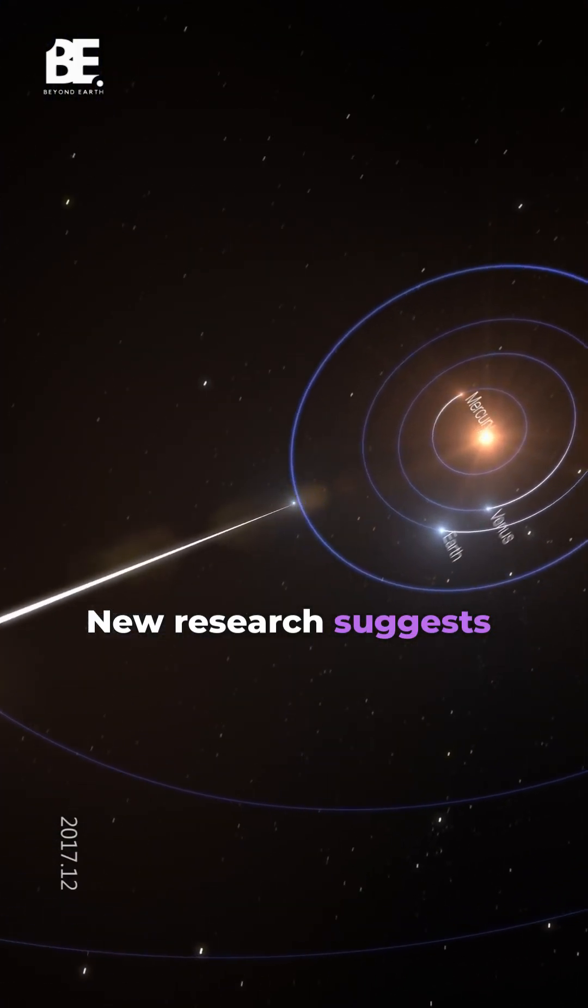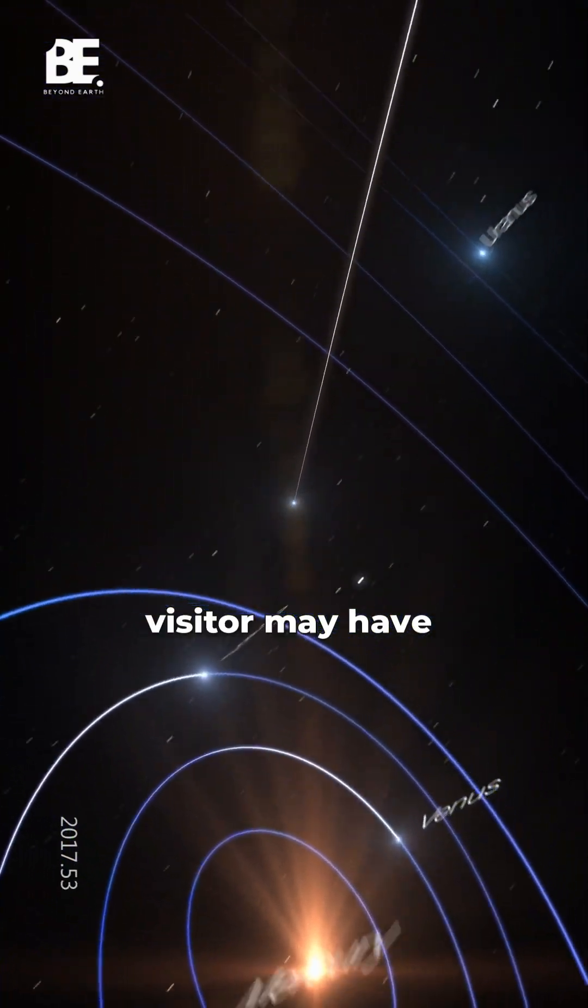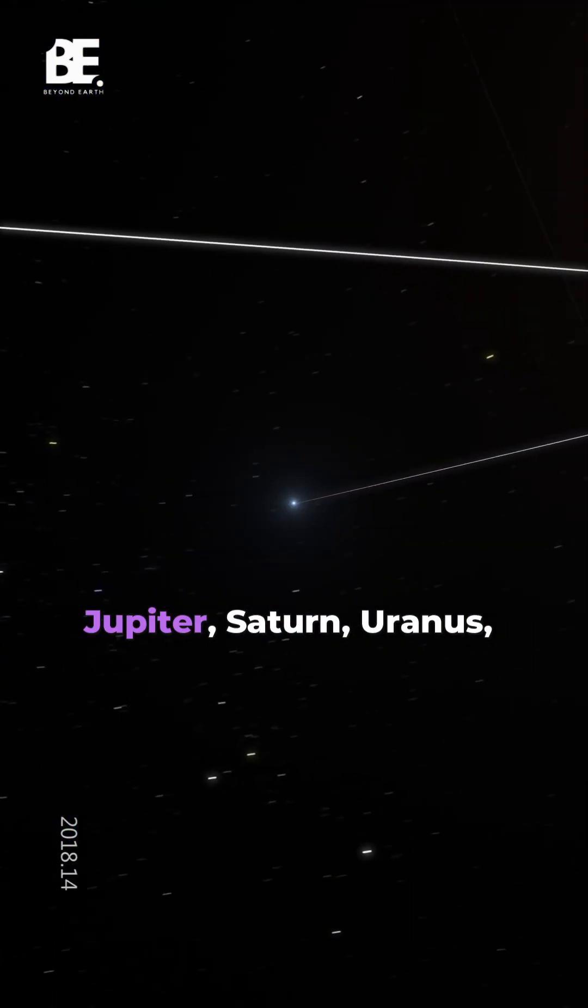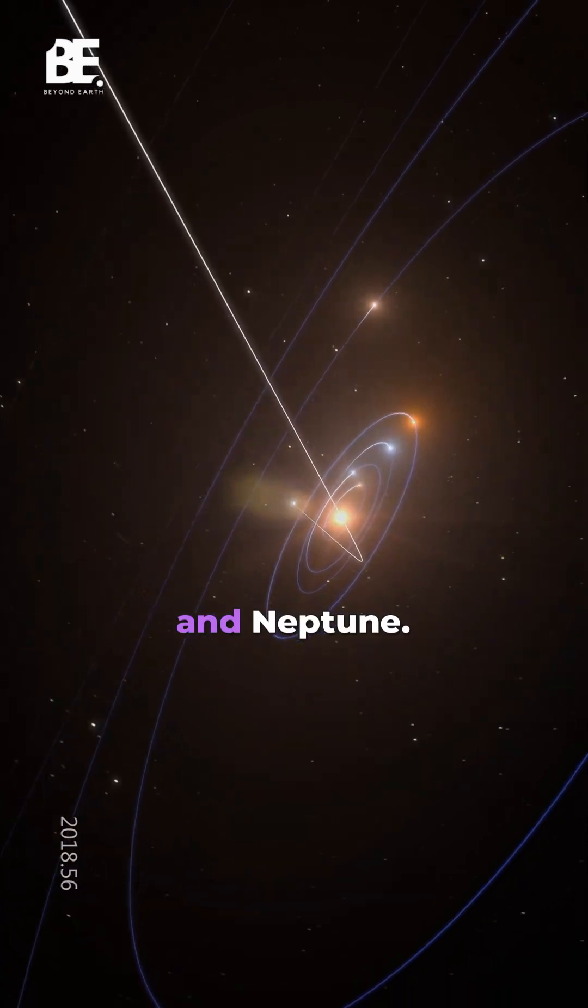New research suggests that a mysterious cosmic visitor may have dramatically altered the paths of Jupiter, Saturn, Uranus, and Neptune.